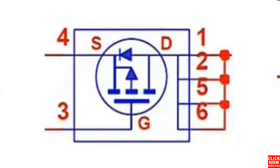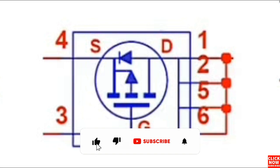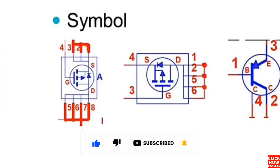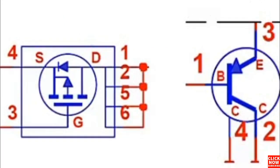When the MOSFET receives the control signal at its gate, it lets the current pass through it — from drain to source or source to drain — depending on the type of MOSFET: whether it is an N-channel MOSFET or a P-channel MOSFET.